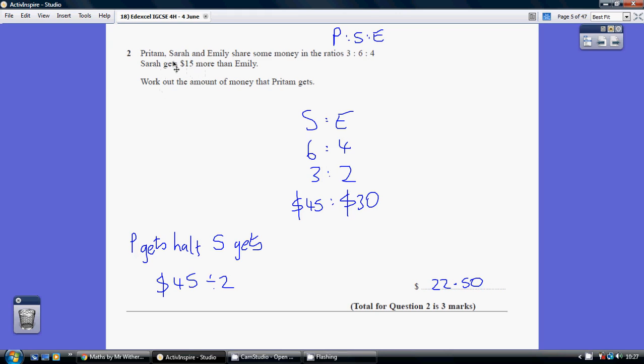Now, given that Sarah gets $15 more than Emily, we're going to need to have $30 here and $45 here. That's still a proportion of 3 to 2, and we've got a difference of 15.